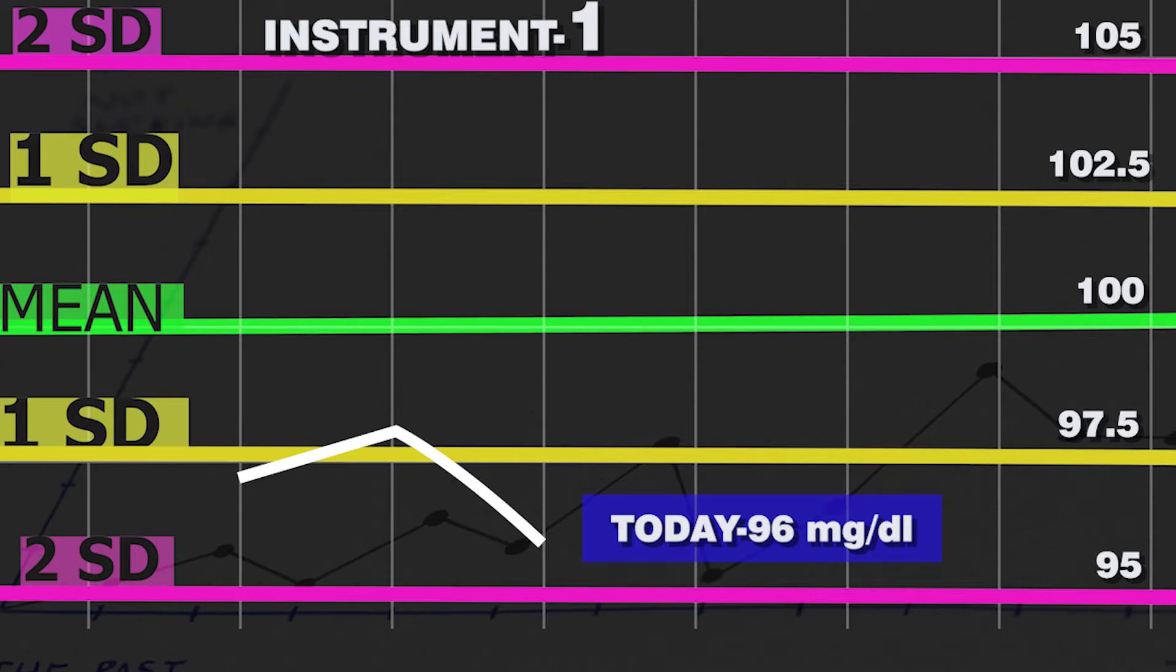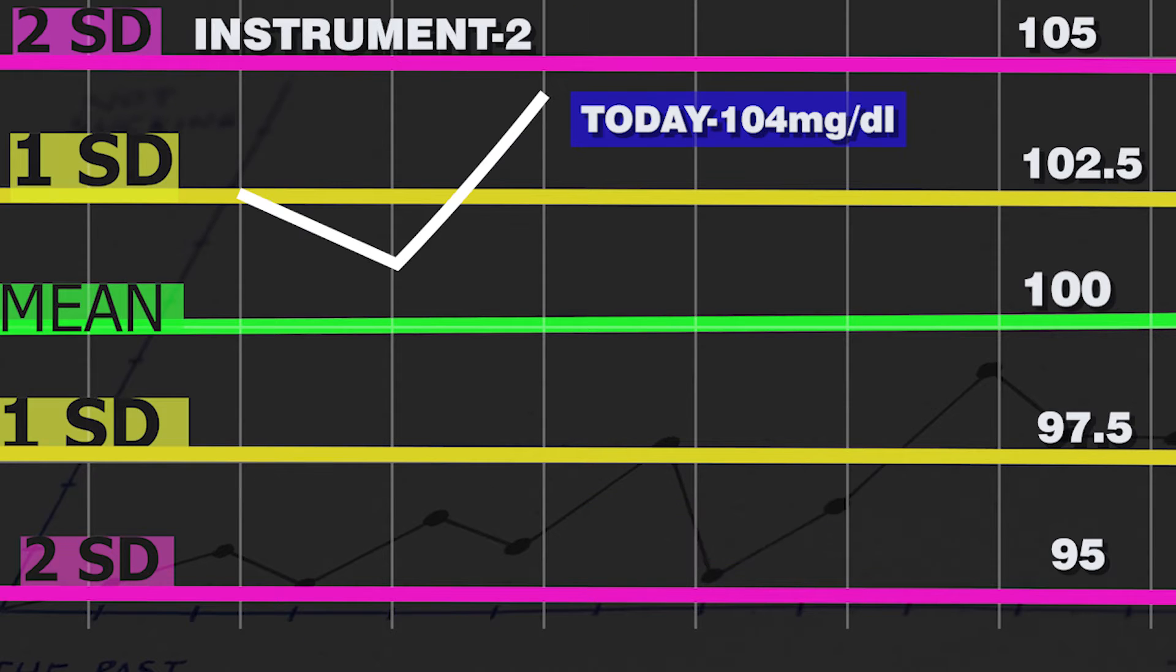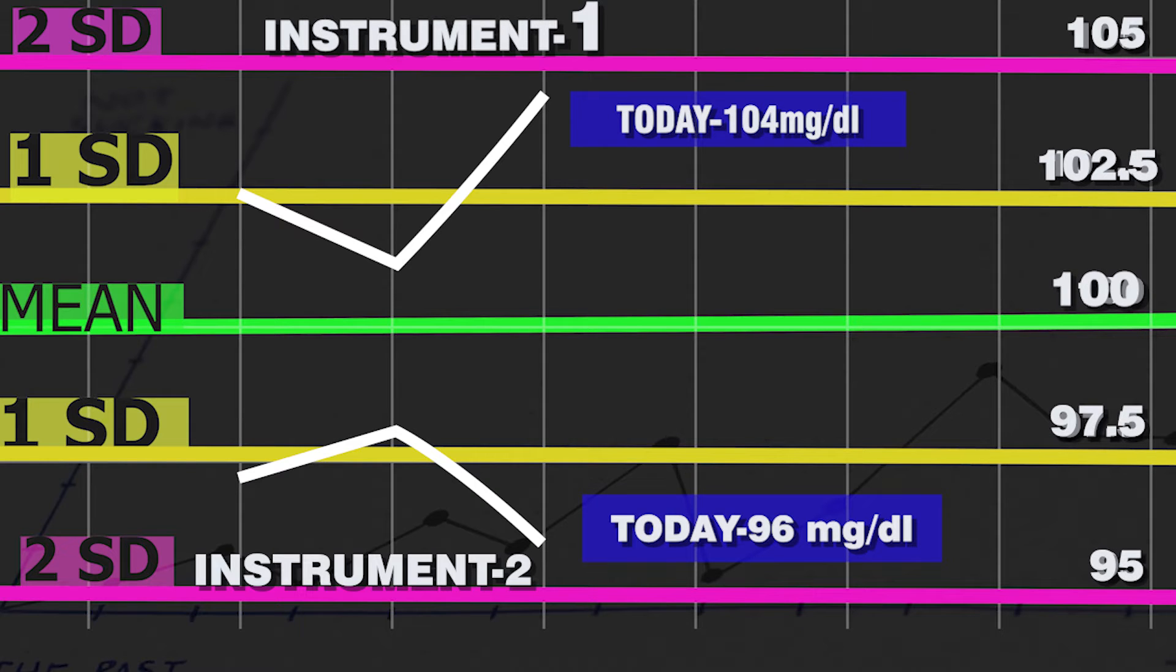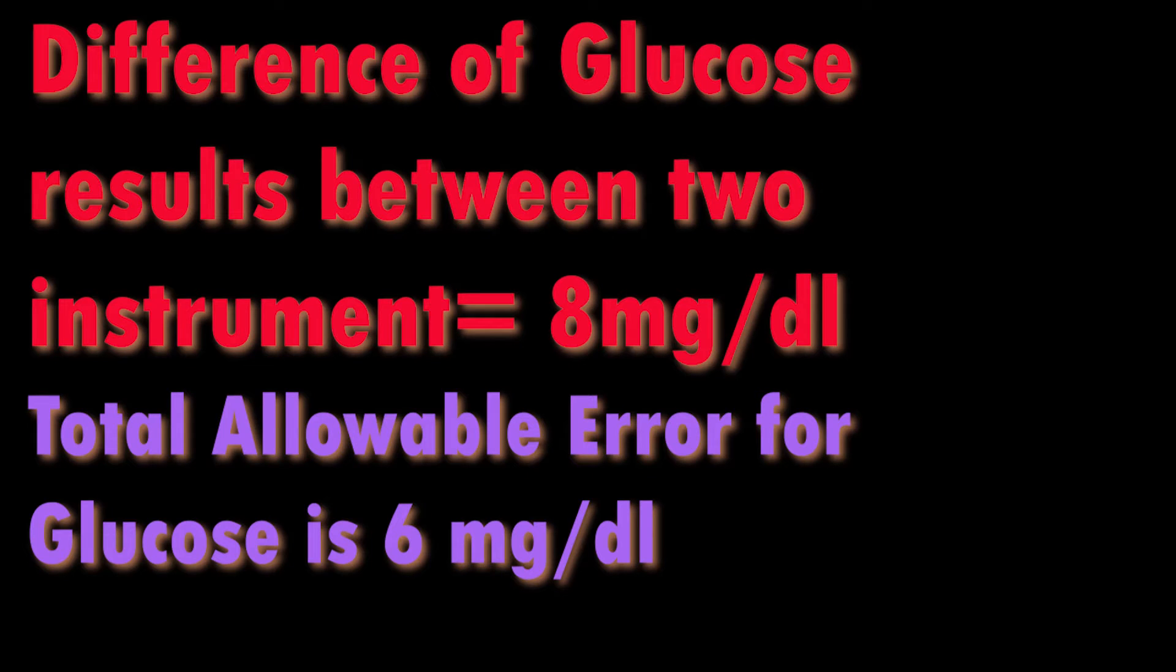I run a glucose QC at first instrument it is 96 milligrams per deciliter that is within minus 2 SD. The second instrument gave 104 milligrams per deciliter that is also within plus 2 SD because our mean is 100 milligrams per deciliter. Both QCs are within the range but according to glucose allowable error it should be 6 milligrams per deciliter but here the difference is 8 milligrams per deciliter between the instruments.